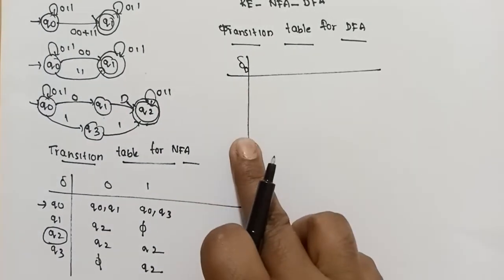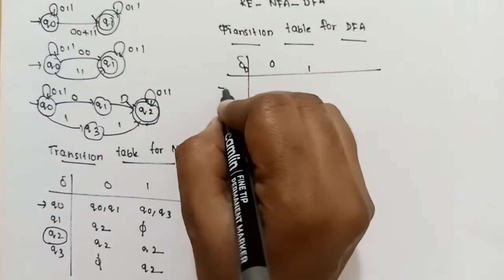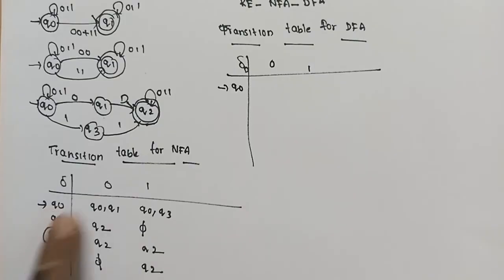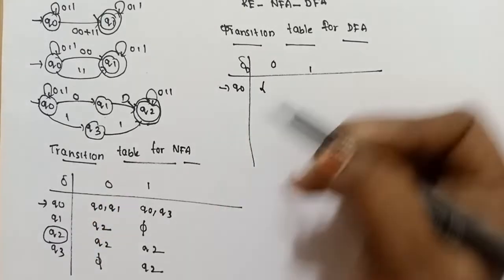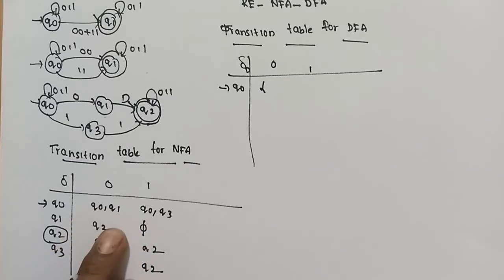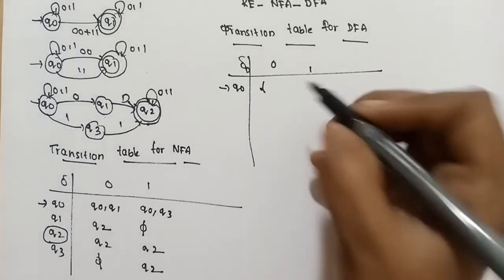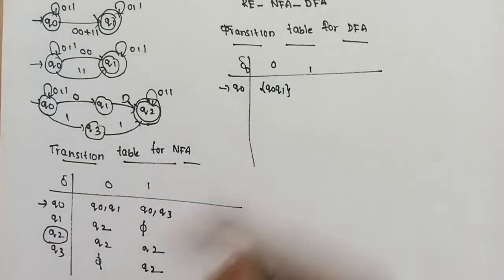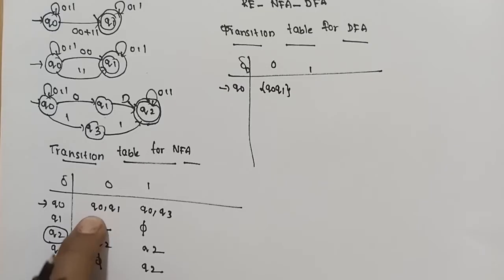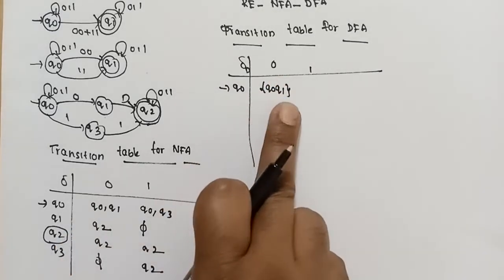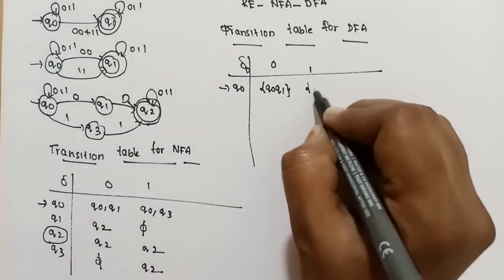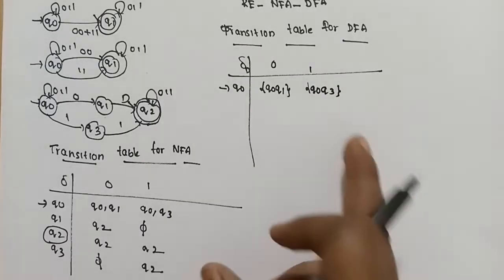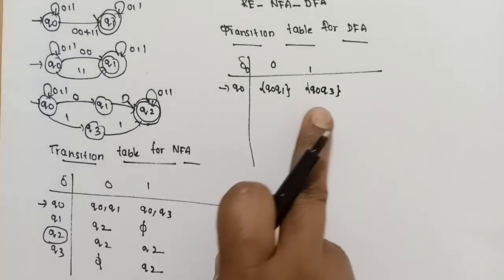The DFA transition function delta has input symbols 0 and 1. The NFA initial state is also the DFA initial state. Q0 on 0 gives {Q0, Q1}. In NFA, Q0 and Q1 are two separate states, but in DFA, {Q0, Q1} becomes a single state. In NFA, Q0 on 0 goes to {Q0, Q1}. In DFA, {Q0, Q1} on 0 goes to {Q0, Q3}. These two separate states will be expanded.